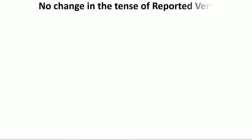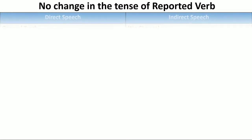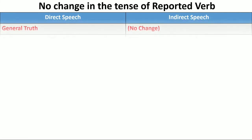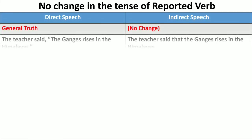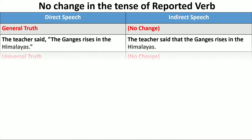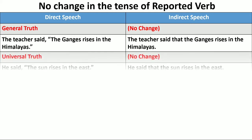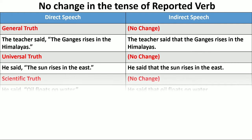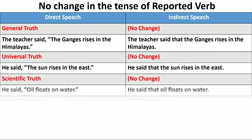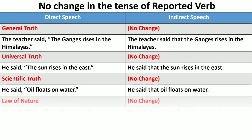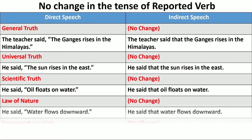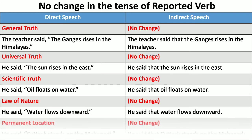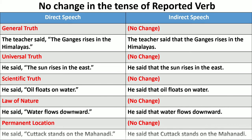No change in the tense of the reported verb whether the reporting verb is in present or past tense — when the sentence expresses a universal truth, scientific truth, law of nature, or permanent location. Examples: 'The teacher said that the Ganges rises in the Himalayas' — no change. 'He said the sun rises in the east' — no change. 'He said oil floats on water' — no change. 'He said water flows downward' — no change. 'He said Cuttack stands on the Mahanadi' — no change in indirect speech.